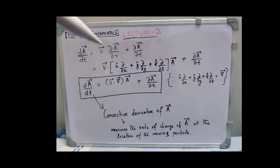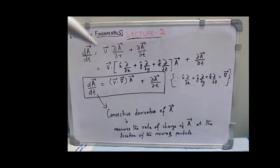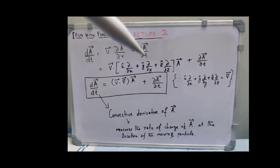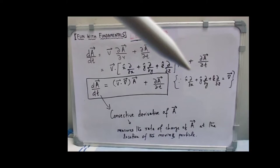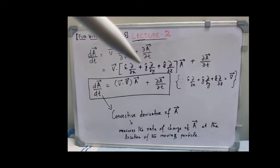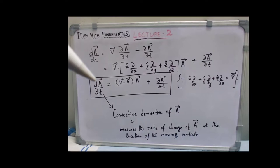dA/dt equals V del A/del r plus del A/del t. We can write this first expression as V dot (x-cap del/del x plus y-cap del/del y plus z-cap del/del z) multiplied by A vector, plus del A/del t. This expression is nothing but the gradient operator, so the equation becomes dA/dt equals V dot gradient operator times A, plus del A/del t.